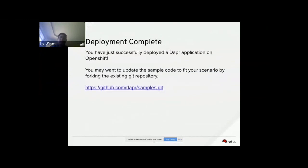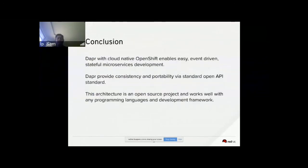Now you've just finished the deployment of a DAPR app. You can go ahead and update the sample code and explore further scenarios. In conclusion, DAPR works well with cloud-native OpenShift, enabling event-driven stateful microservices deployment and development. DAPR provides consistency and portability using standard APIs including HTTP and gRPC. This architecture is open source and works well with any programming language and development framework.